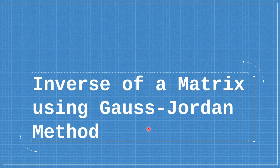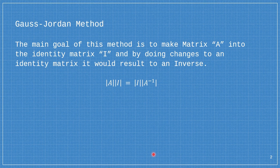I'm going to discuss the inverse of a matrix using the Gauss-Jordan method. The main goal of this method is to make matrix A into the identity matrix, and by doing changes to an identity matrix, it would result in an inverse. This is our guide in solving the inverse of a matrix using the Gauss-Jordan method.